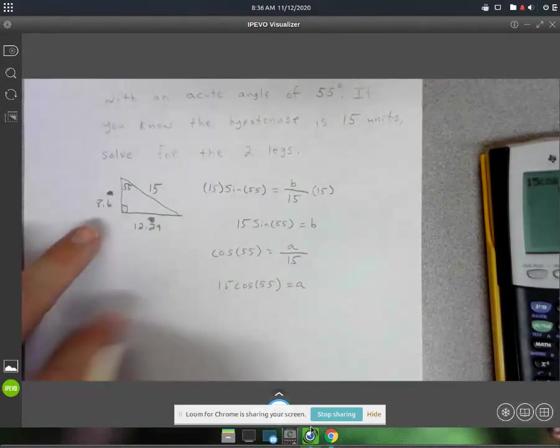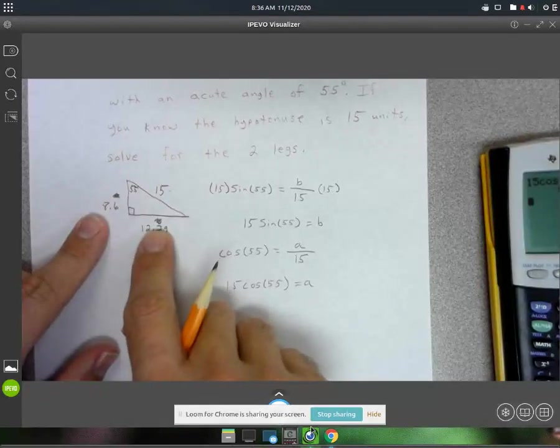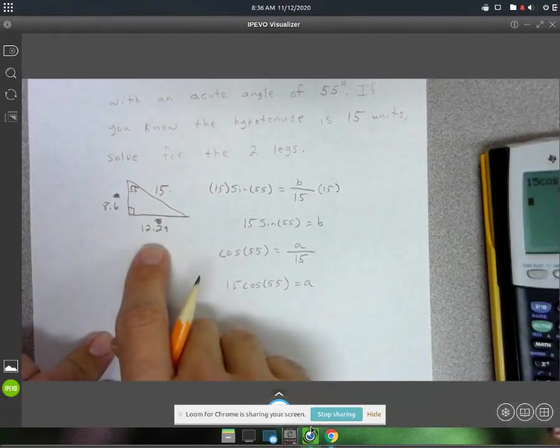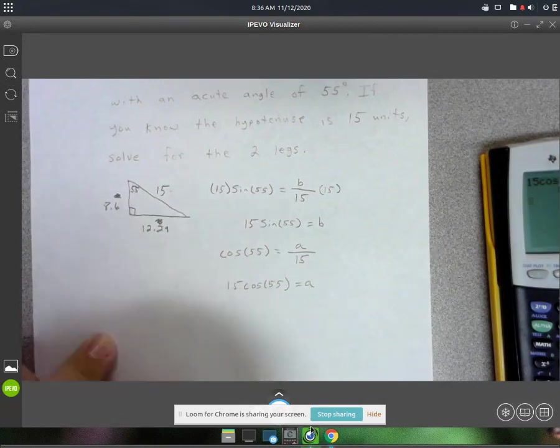Again, if you wanted to, after you got this one, you could have used the Pythagorean theorem to do 15 squared minus this one squared equals that one squared. You could have done that.